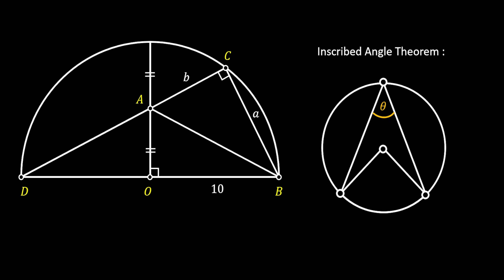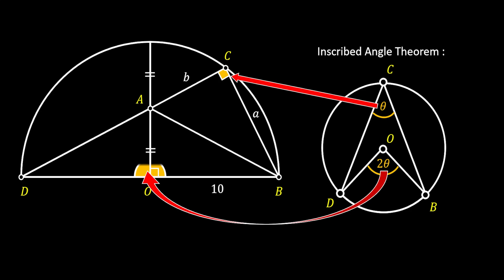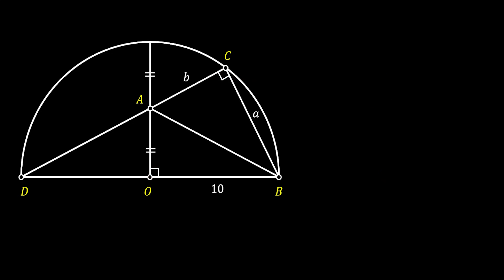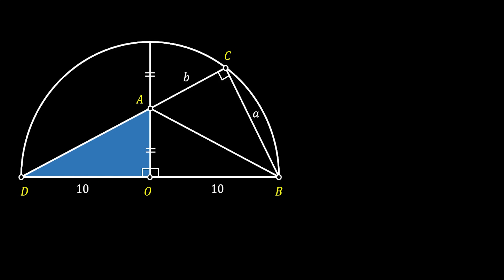The inscribed angle theorem states that an inscribed angle is half the central angle intercepting the same arc. The angle at C is 90°, and the corresponding central angle at O is 180° — exactly twice the angle at C. This confirms the extension of line AC reaches point D at the end of the diameter. In right triangle DOA, OD equals the radius (10) and OA equals half the radius (5).